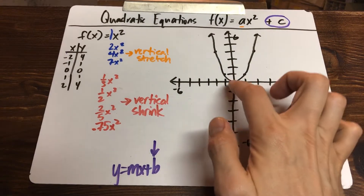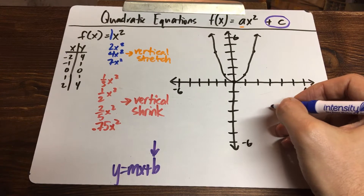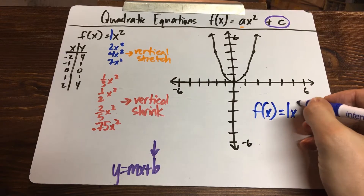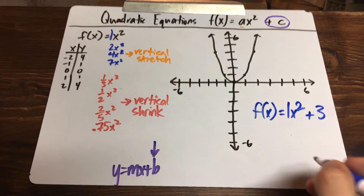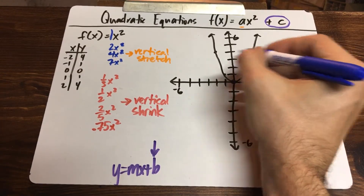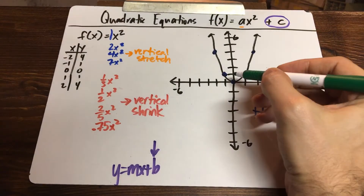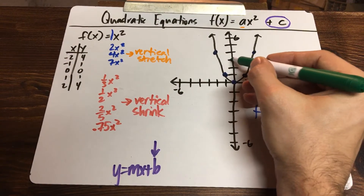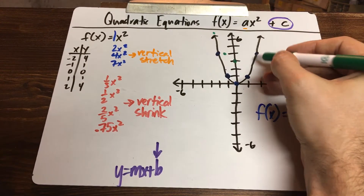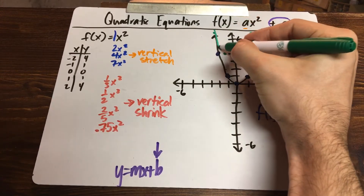It's not going to have the vertex on the origin anymore. For example, if we take our regular graph and add plus three, that's just going to move all these points up three places — shifting the entire graph up three units. The graph has the same width; we're not changing the width at all.